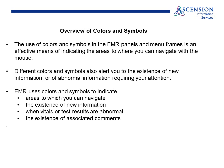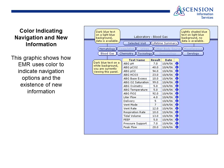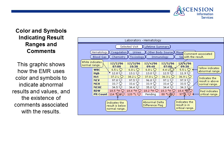The use of colors and symbols in the EMR panels and menu frames is an effective means of indicating areas where you can navigate with your mouse. Different colors and symbols also alert you to the existence of new information. Dark blue text on a light blue background means that there is data available. Dark blue text on a white background indicates the panel you are currently viewing. Lightly shaded blue text on a light blue background indicates that there is no data available for that particular panel. Colors and symbols are also used to indicate abnormal results and values and the existence of comments associated with the results.